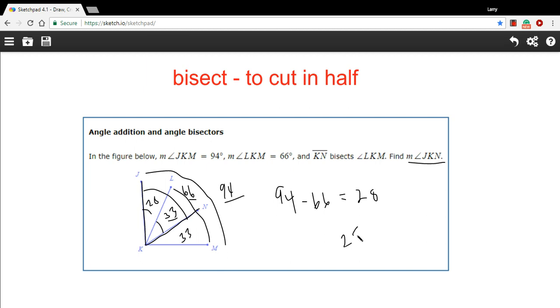And then we add the 28 to the 33 to get this part right here. So 28 plus 33 is going to equal 61 degrees.